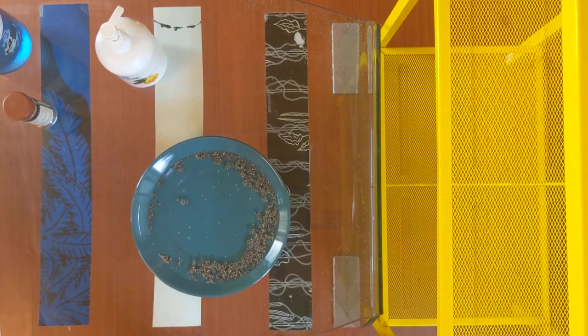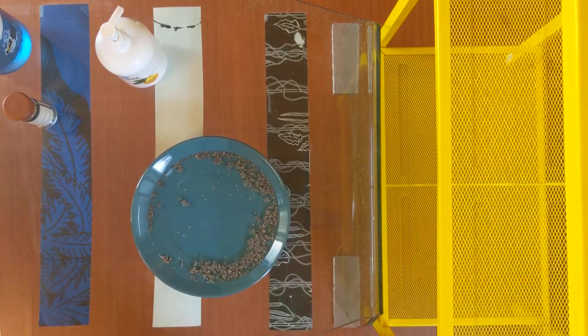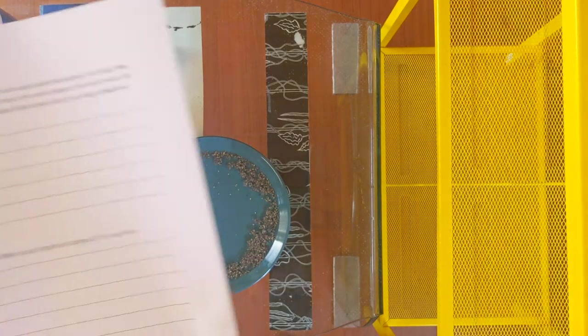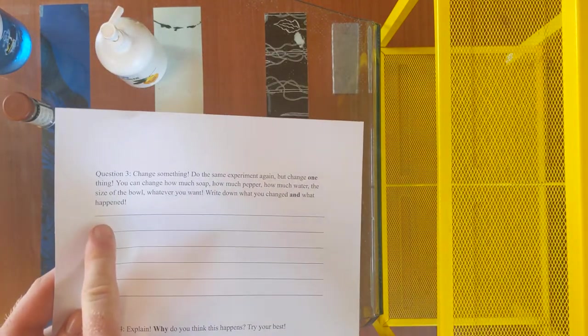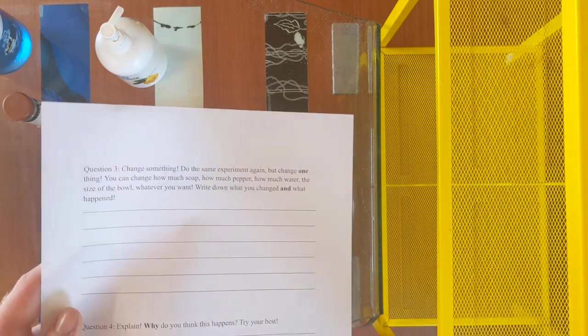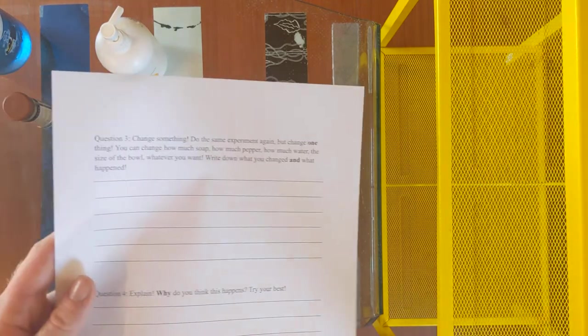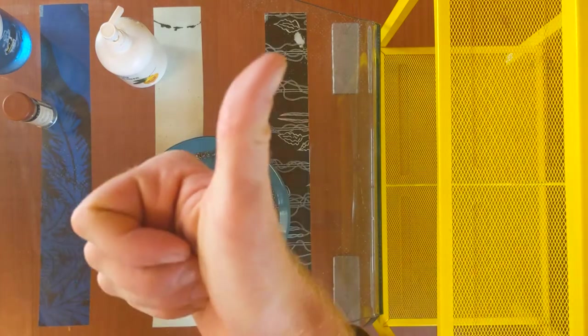So right now, I want you to pause the video and change one thing and do it by yourself. When you are all done, if you have this paper, write down the one thing you changed for question three and what happened when you changed it. Hit play when you are done.